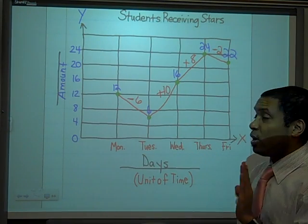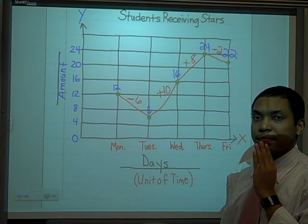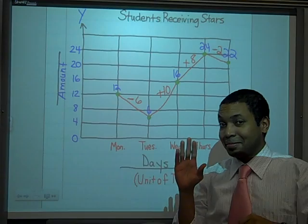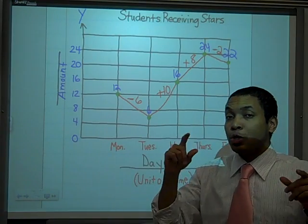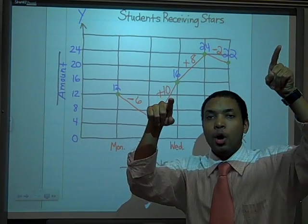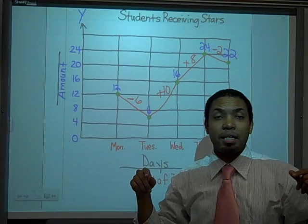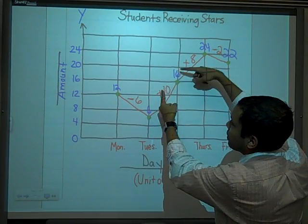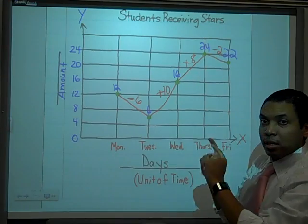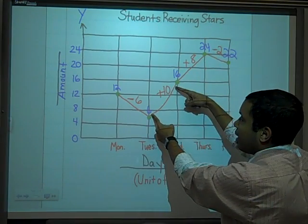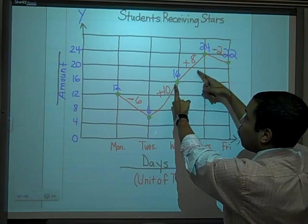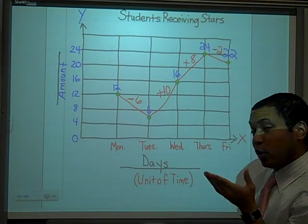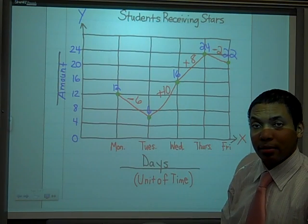Kipsters, if you've ever been asked 'between which two days did you see the greatest increase,' many of you are tempted to pick the two highest points on the graph. But 'between which two days' means we're focused in between the points, not on the highest points themselves. The only increases are between Tuesday and Wednesday (+10) and between Wednesday and Thursday (+8). The greater increase is 10, so the answer is between Tuesday and Wednesday.